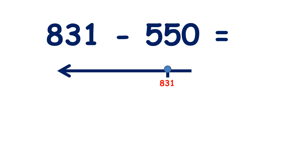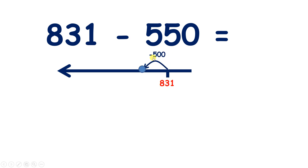Now pause the video and subtract 550 from 831. So we need to subtract five 100s, then five 10s. If we have eight 100s and subtract five 100s, that leaves us with three 100s, and of course we still have the 31 that we started with.